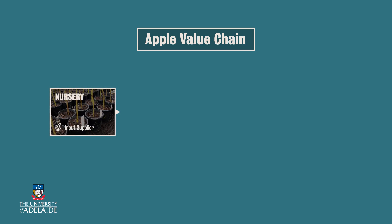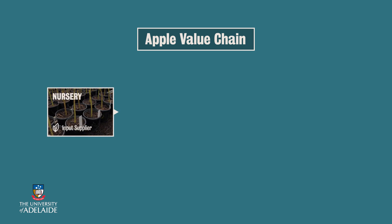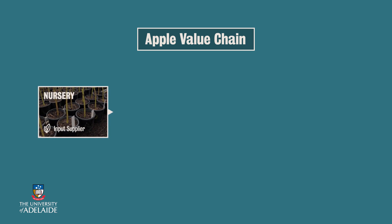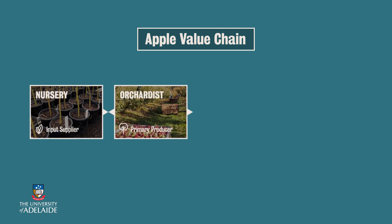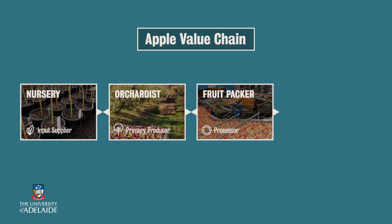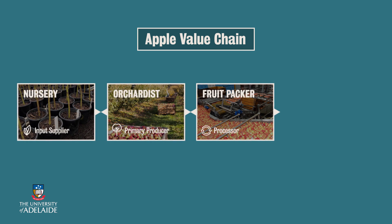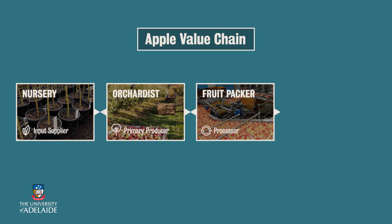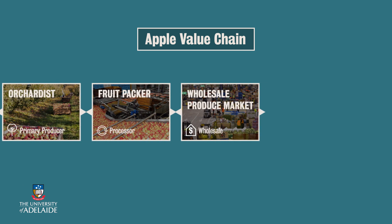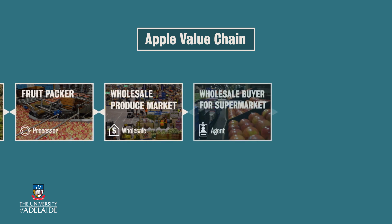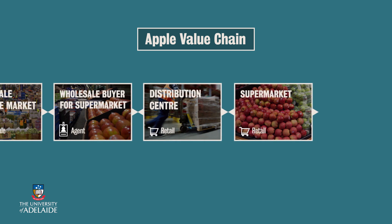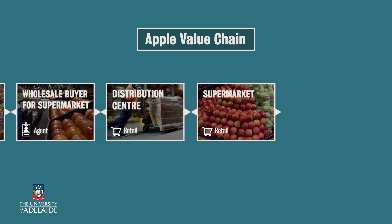An apple grower will source rootstock from a nursery, selecting healthy varieties suitable for local climate and soil profiles. After growing the trees and harvesting the apples from them, the Pink Ladies are transported to a local cooperative, which adds value through sorting, grading, providing cold storage, and minimal packaging for distribution. Apples are then transported to a wholesaler, who gets involved in the distribution and transport to the retail market. Finally, the apple is purchased by the consumer.